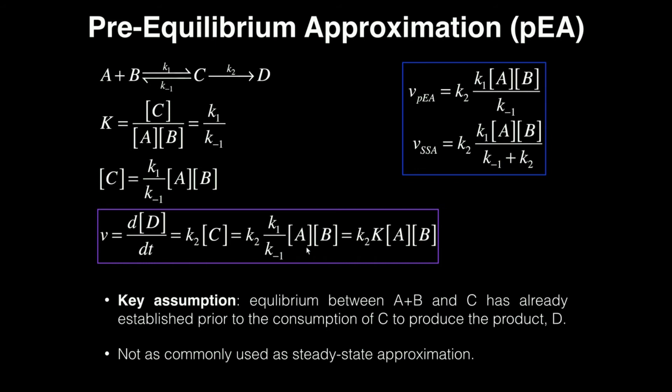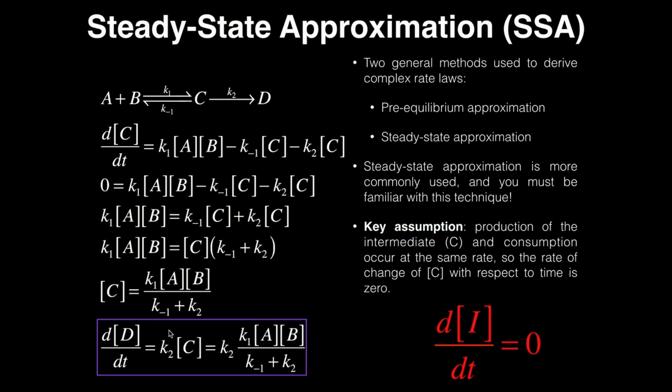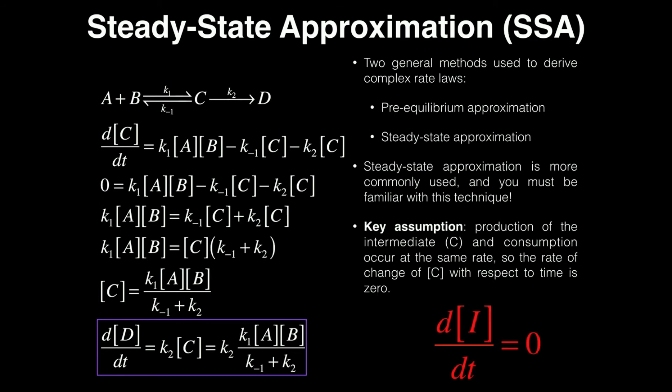Now to really conclude this video, let's actually look at something. We previously derived the expression for the rate of the formation of D using steady state approximation, and that had different assumptions than that of the pre-equilibrium approximation. So let's look, are there any differences in these equations?